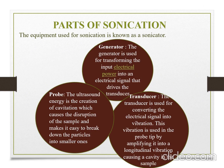The parts of sonication. The equipment used for sonication is known as a sonicator. Generator, transducers, and probes are its components. The generator is used for transforming the input electrical power into an electrical signal that drives the transducer. The transducer is used for converting the electrical signal into vibration. This vibration is used in the probe tip by amplifying it into longitudinal vibration, causing cavitation in the sample.